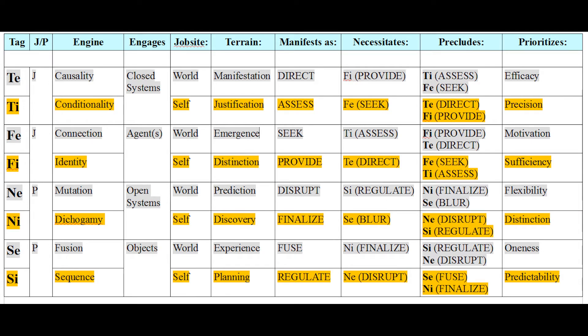This slide shows what each function does if it's your main function. Looking particularly at the two in question here — TE and NE — TE is a function of causality; it deals with closed-system, real-world manifestations of logic. NE is an engine of mutation; it is one way in which new logics emerge. TE prioritizes efficacy and NE prioritizes flexibility.